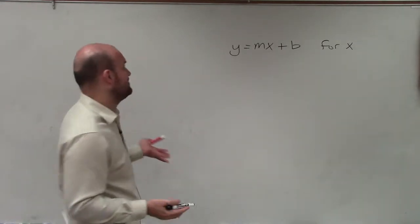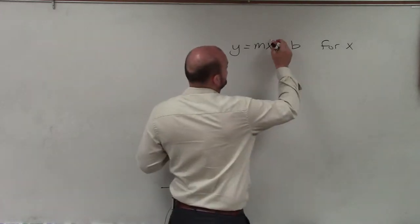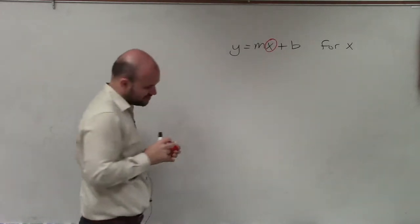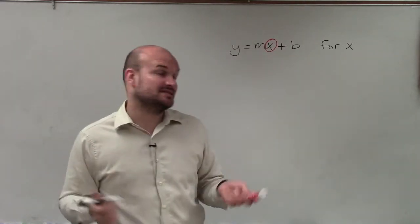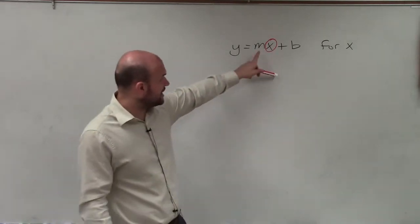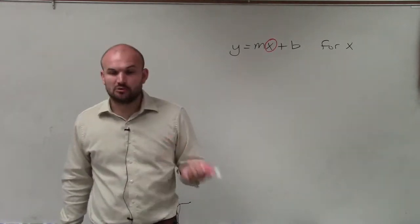So to go ahead and do that, I need to isolate my variable x. And a lot of times what I like to do is circle the x, and then determine what operations are happening to the x. And we can see this x is being multiplied by our variable m, as well as being added by our variable b.